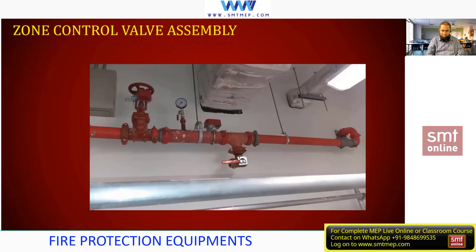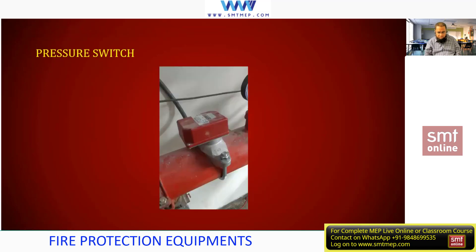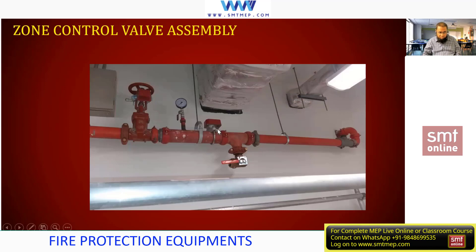Next, you see a preview of the zone control valve assembly. All these accessories together we can call zone control valve assembly. On every floor you'll find this zone control valve assembly. If the number of sprinklers is less than 280, one assembly is needed; if more than 280, an additional zone control valve is required. In this zone control valve assembly, you have the OS&Y gate valve with supervisory switch, a pressure gauge, a pressure switch, and a test and drain valve.